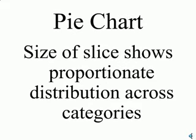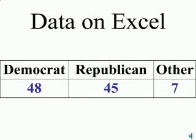The pie chart gives a circular diagram in which the size of the slice shows the relative proportionate distribution across the different categories of the variable. Here's an example of how you might have your data on Excel to begin with. Suppose we're looking at the distribution of votes in the last election.